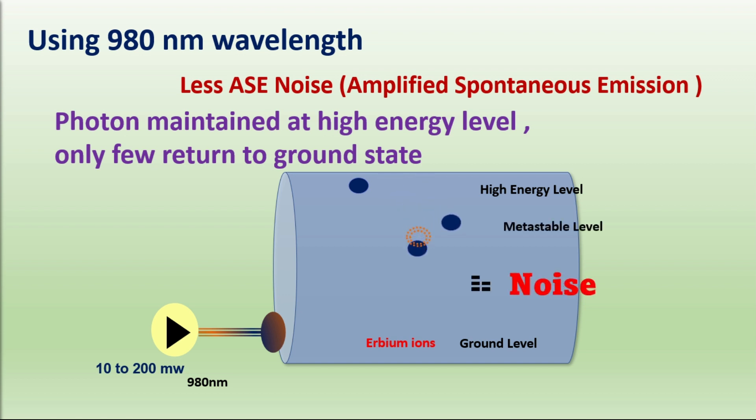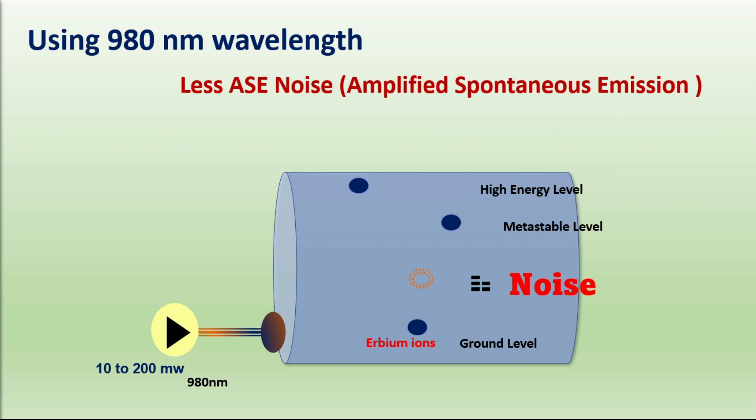Only a small percentage of ions return to ground state which produces low noise. Due to few photons dropped and producing less energy, that's why have low to modest gain around 10 to 15 dB.